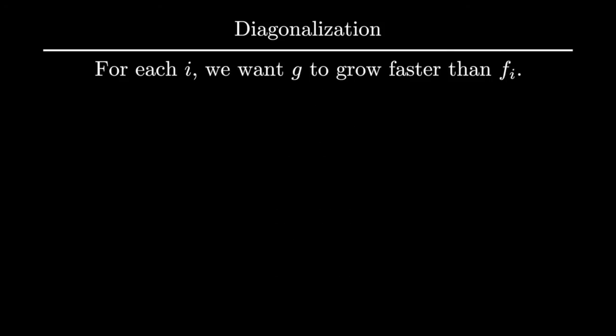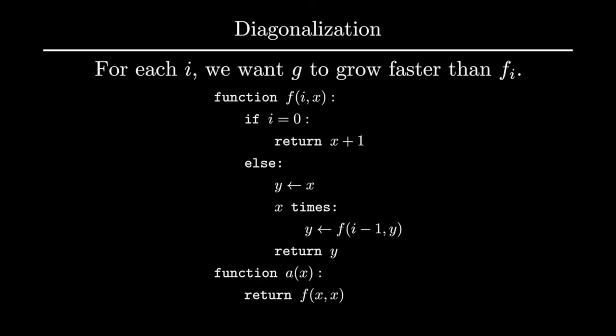For any f_i in the fast-growing hierarchy, g would be larger than it for all inputs larger than i. It's also really easy to code by just adding one line to our previous code. I've called the function a here because it's very similar to the Ackermann function. The function has a more suitable name though by extending the fast-growing hierarchy to include this. It's called f_omega. Omega is an ordinal number. It's clearly not the kind of number we usually think of because there is no number larger than infinitely many natural numbers.